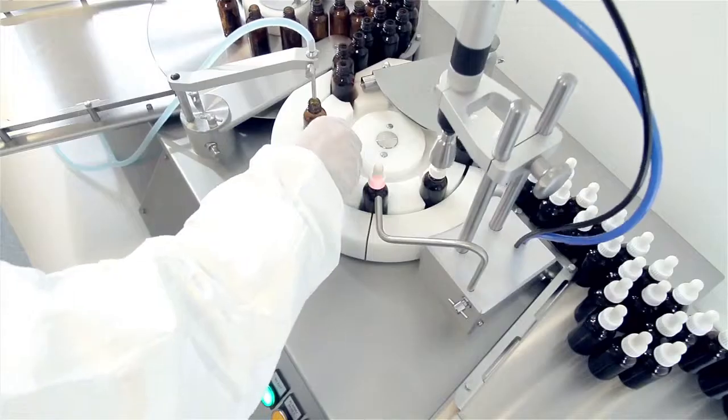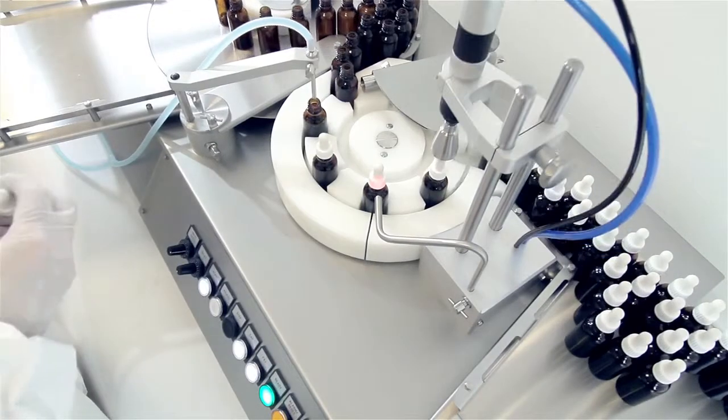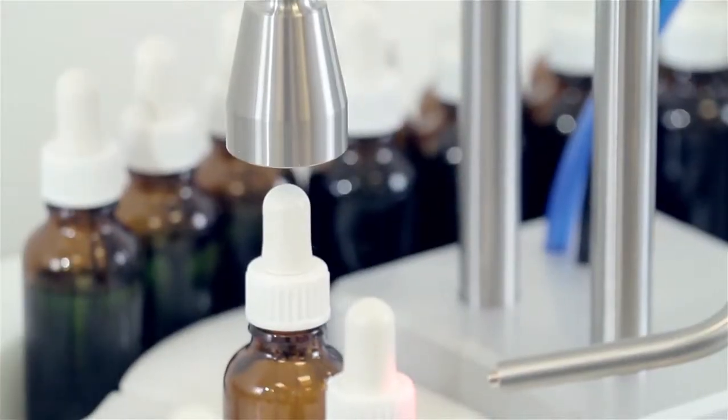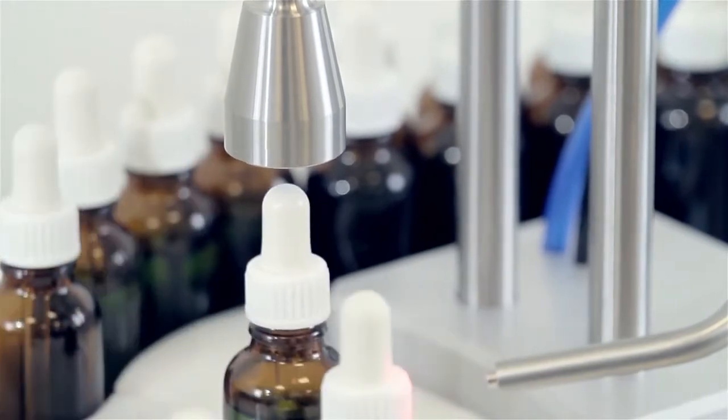Filled and capped bottles leave a standard FlexFeed 30 on trays. However, the machine can be customized with bottles being fed onto a conveyor into a labeling machine, further improving productivity.